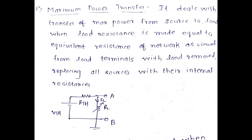The Maximum Power Transfer Theorem deals with the transfer of maximum power from the source to the load. The source is one part of the circuit and the load is the other part. Maximum power transfer occurs when the load resistance is made equal to the equivalent resistance of the network as viewed from the load terminals, with the load removed and all sources replaced by their internal resistances. The RL terminal is open.